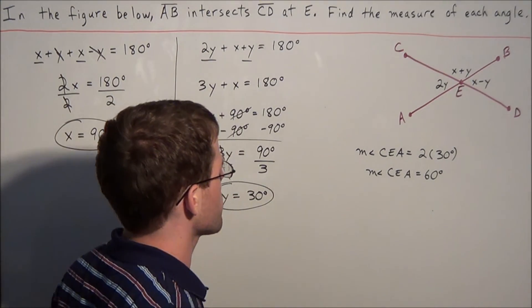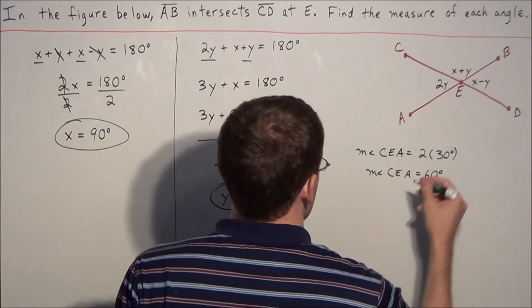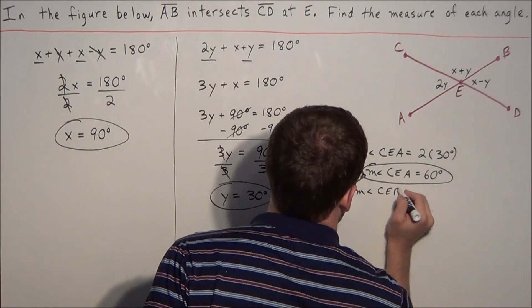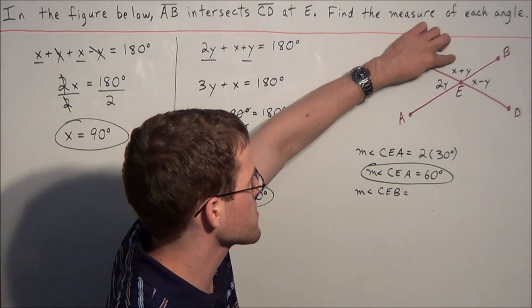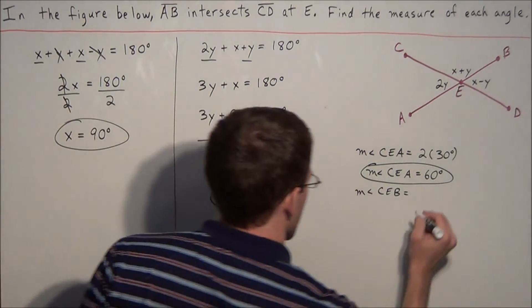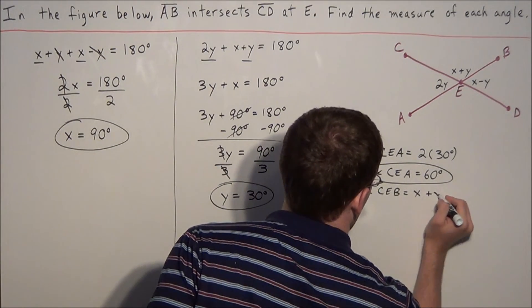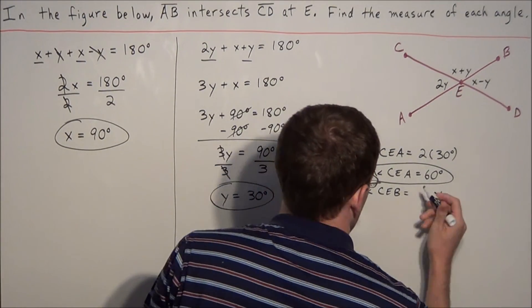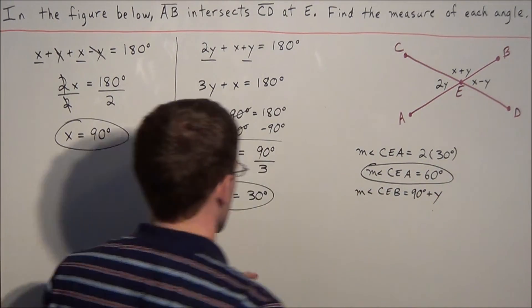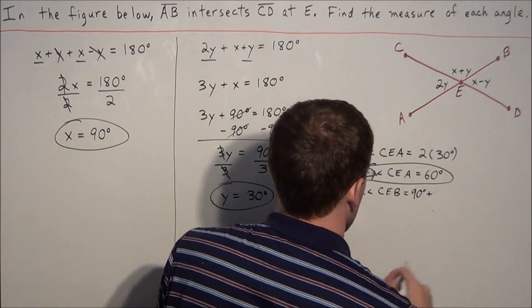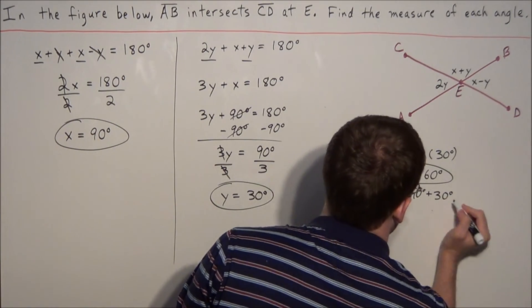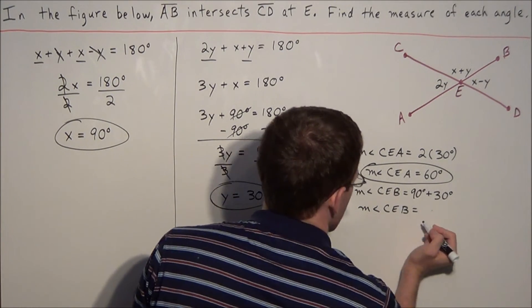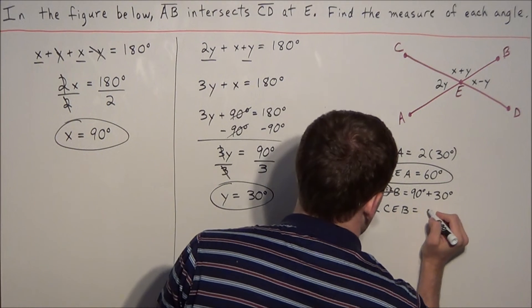To find the measure of angle CEB, we replace X and Y. We have X plus Y. X we found to be 90 degrees and Y we found to be 30 degrees. So the measure of angle CEB is equal to 90 degrees plus 30 degrees, which is 120 degrees.